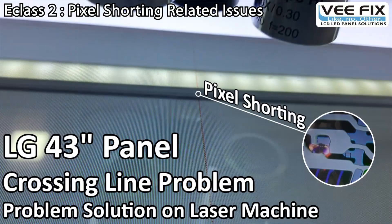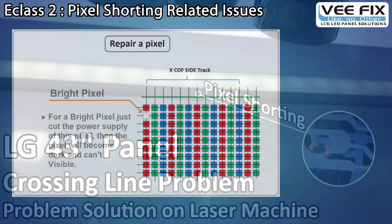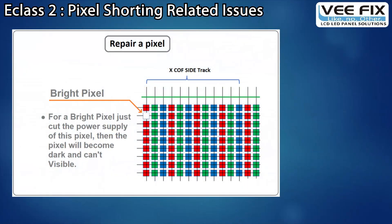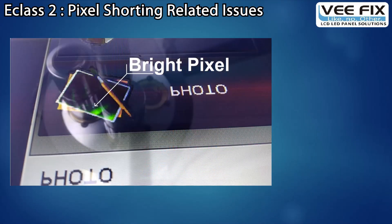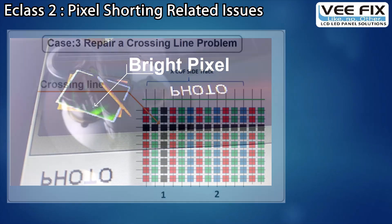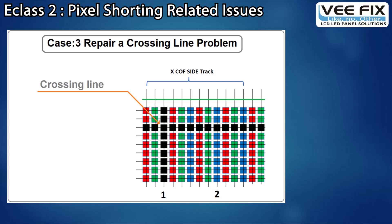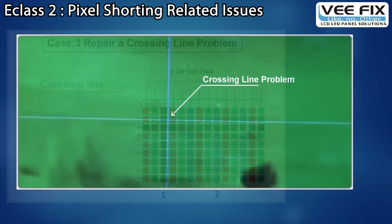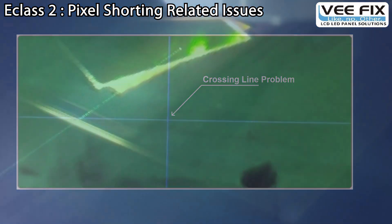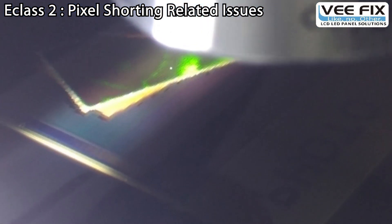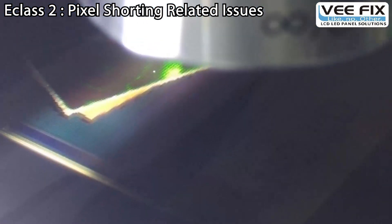In the second E-class you will get knowledge about how to solve problems generated due to pixel sorting — like how to isolate a stuck pixel or bright pixel, how to solve a crossing line, or how to solve a half line due to pixel sorting. We will see all of this practically.